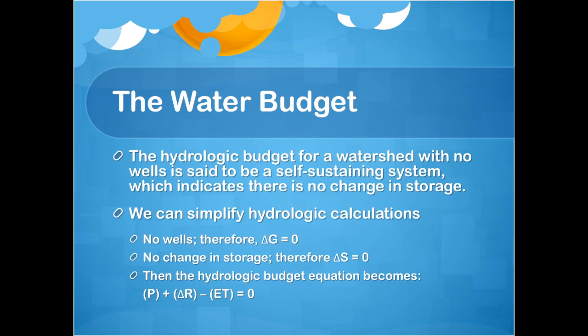We can simplify the water budget calculation for a watershed that doesn't have wells and is self-sustaining. No wells means we can assume there is no change in groundwater flow, and self-sustaining tells us there is no change in storage. Then we can rewrite the water budget equation as: precipitation plus the change in stream discharge minus evapotranspiration equals zero.